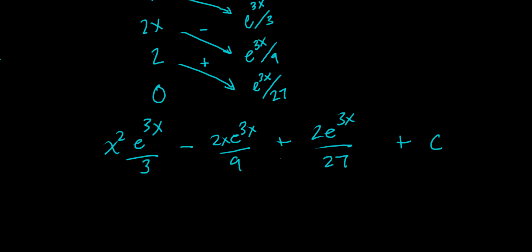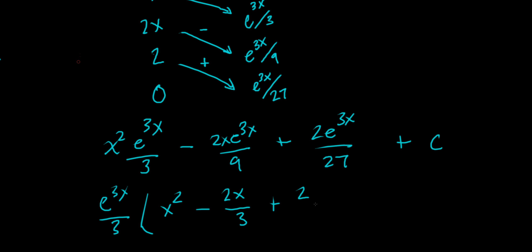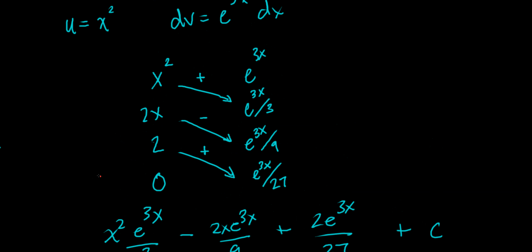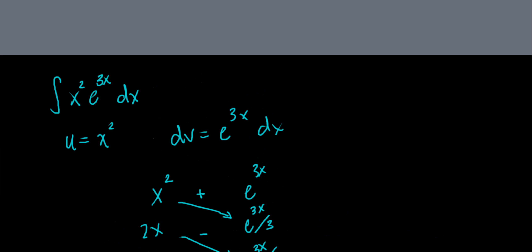Now we pull out the common factor e to the 3x over 3 from every term — it's present in the first term directly, tucked inside the 9 in the second term, and tucked inside the 27 in the third. Factoring it out gives e to the 3x over 3 times the quantity x squared minus 2 thirds x plus 2 over 9, plus C. We get the same answer as before, and it was a lot easier using the tabular method. In future videos we'll do similar problems with higher degree powers like x cubed or x to the 4th. See you in the next video.